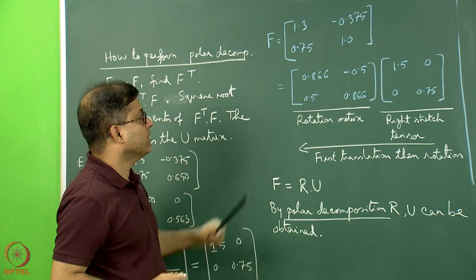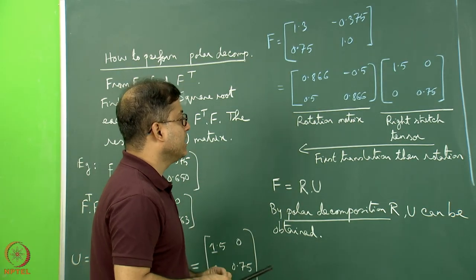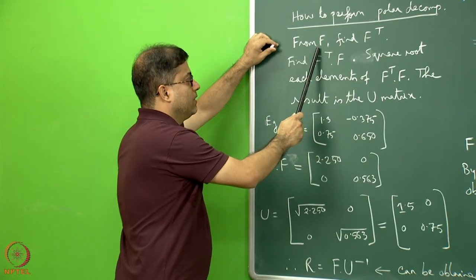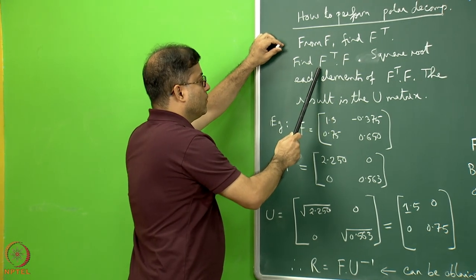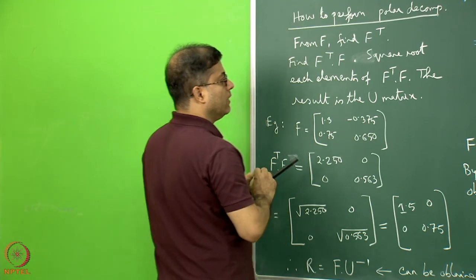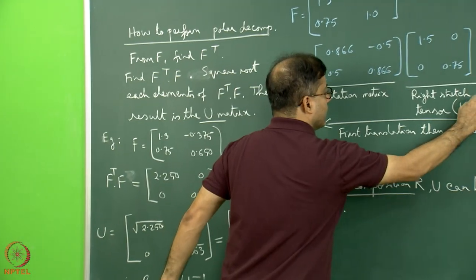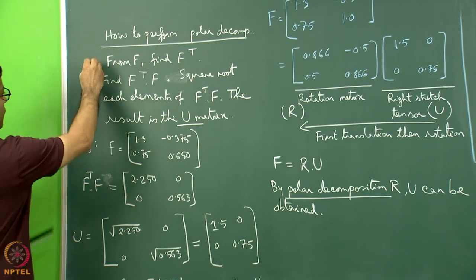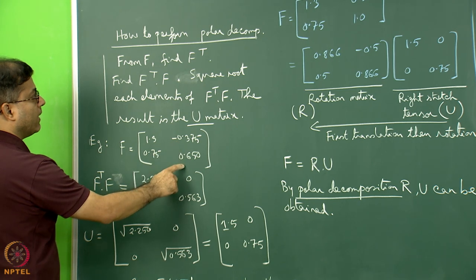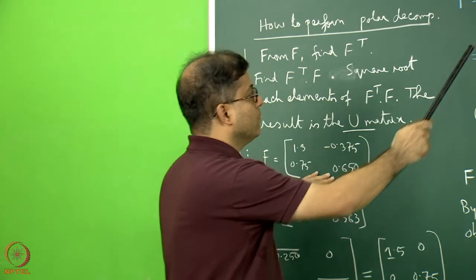To perform polar decomposition: given the Jacobian matrix F, find F-transpose, then compute Fᵀ·F, then take the square root of each element of that matrix — the result is the U matrix, the right stretch tensor. With actual numbers: F = [1.3, -0.375; 0.65, 1] (corrected values). Compute Fᵀ, then Fᵀ·F to get a matrix, then square-root each element to obtain U = [1.5, 0.75; ...].